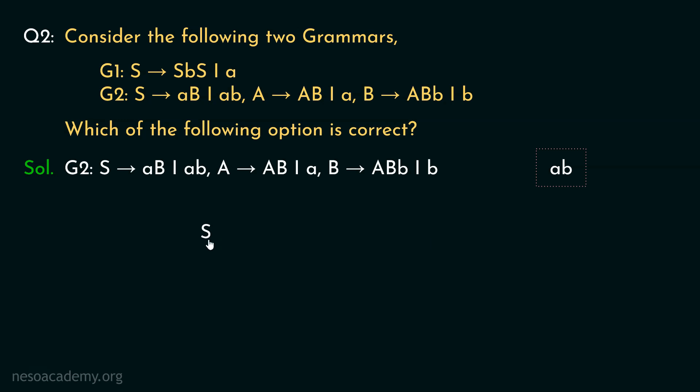Now starting from the start symbol S, if using the first part of the first rule, that is, S can be rewritten as small a capital B, we can derive small a capital B. Now using the rule B can be rewritten as small b, from this B we can derive the lowercase b. So the traversal will yield small a small b.